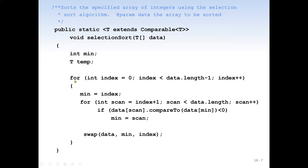When we get the first item in the outer loop, we move to the second for loop. The inner for loop scans through all the items to find the minimum value, then we swap it. We assign the current index to 'min', then scan the next values from index+1 to data.length, incrementing each time. We compare the present scanned value with data[min] — if data[scan].compareTo(data[min]) is less than zero, the scanned value is smaller, so we assign scan to min.